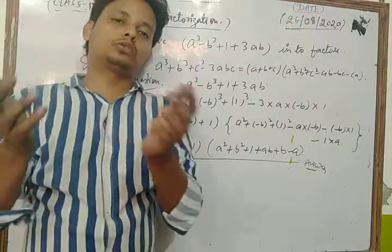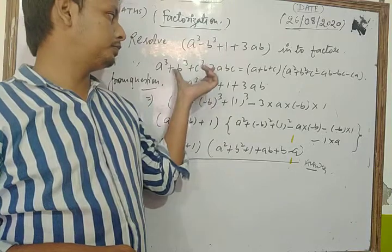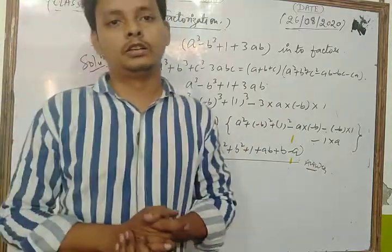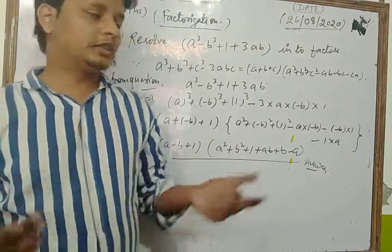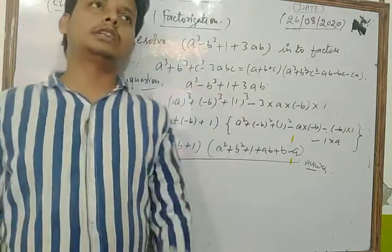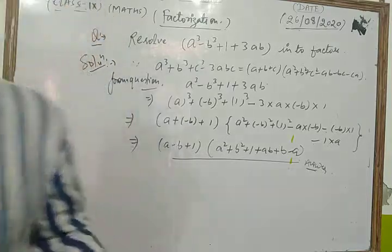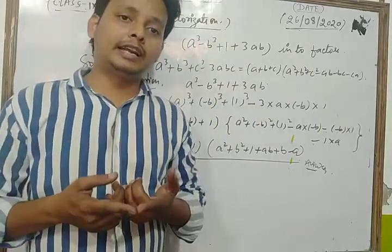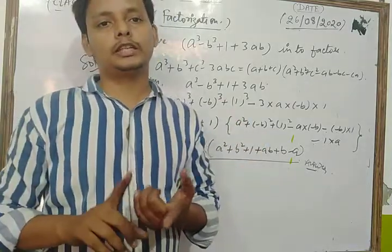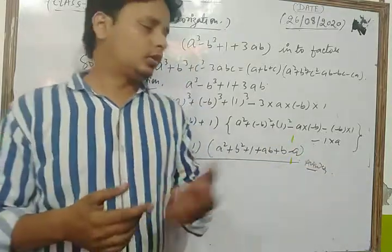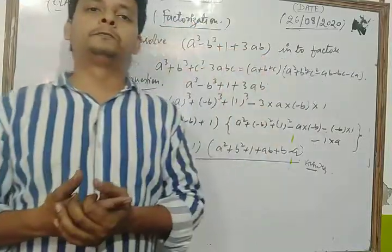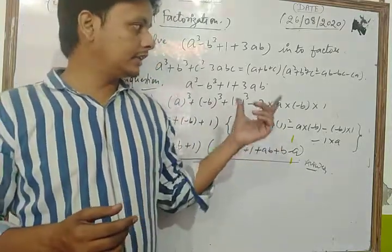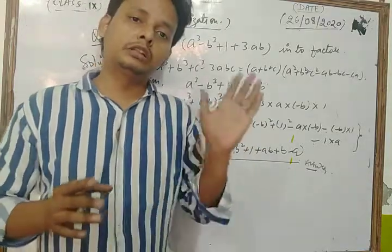Today we solved all the questions of your NCERT exercise based on the identity a³ + b³ + c³ - 3abc = (a + b + c)(a² + b² + c² - ab - bc - ca). We solved all types of questions based on that identity. Revise all the algebraic identities discussed in this class and the previous class — including (a + b)³, (a - b)³, and a³ + b³ + c³ - 3abc — then practice all NCERT exercise questions.